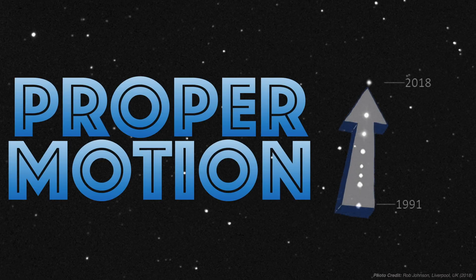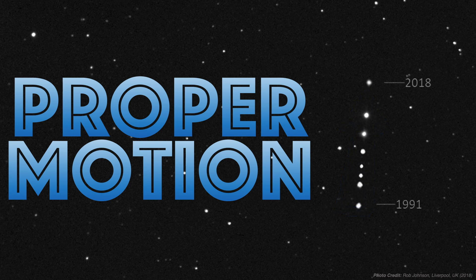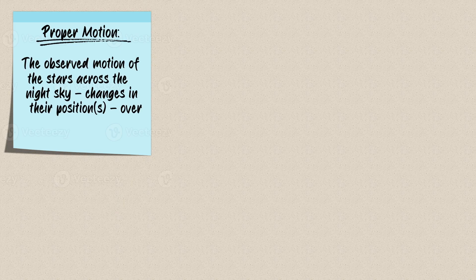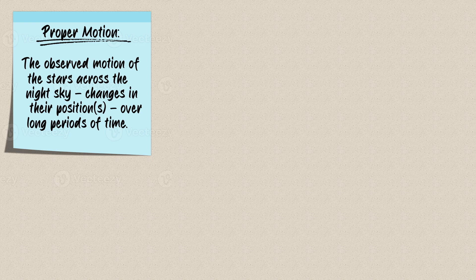It's time to talk about the proper motion of stars as we continue to discuss the different types of motions in the sky through this series. Proper motion can be defined as the observed motion of the stars across the night sky, but specifically it refers to the changes in their positions that can be seen over long periods of time.